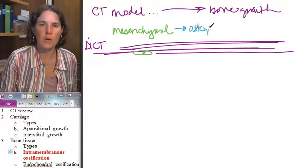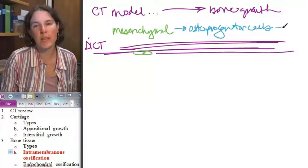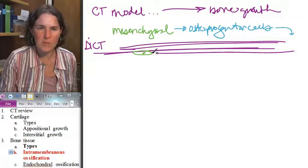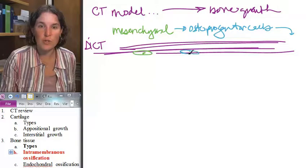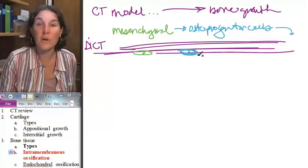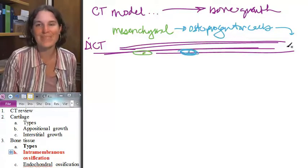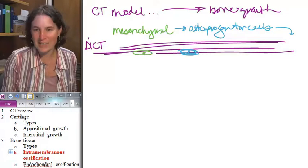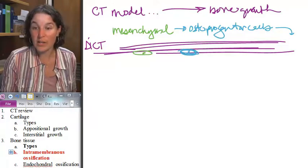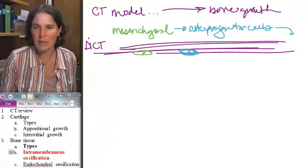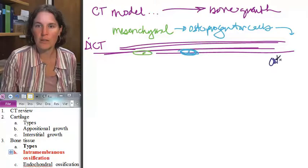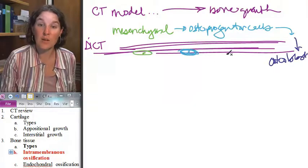And guess what they give rise to? So this mesenchymal cell is going to essentially become an osteoprogenitor cell. And then who is going to build bone, my friends? Osteoblasts. So the osteoprogenitor is going to turn into a blast. Let's make our blast blue. Osteoblasts. And the blasts are going to build bone.